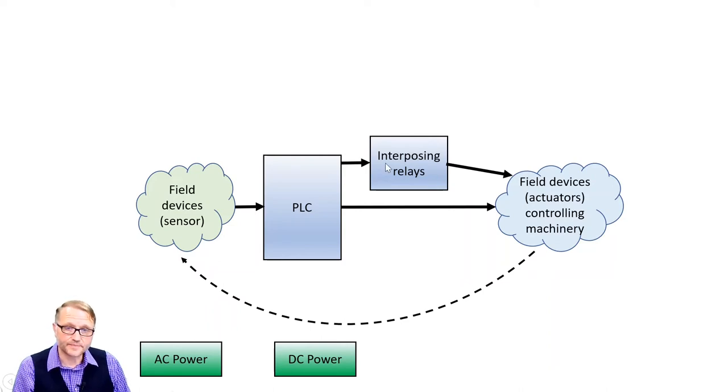Interposing relays. Interpose means to put yourself in between. We'll talk about this in a moment, because a relay is something that you can physically observe. And while we're here, we also have AC power and we have DC power. And I suppose you could argue that you can see that as well, because if you don't have the DC power or AC power, depending on which PLC you have, if you don't have that going to the PLC, the power light will not be on.